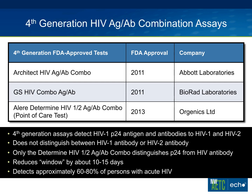What do we know about these fourth-generation tests? They detect both antigen and antibodies to HIV-1 and HIV-2, but they do not distinguish HIV-1 from HIV-2 — that's a really critical concept. They're not going to miss HIV-1 or HIV-2, but they won't tell you which one it is. Only the Determine test actually distinguishes whether it's antigen or antibody tripping the test. From a sensitivity standpoint, these tests reduce the window period by about 10 to 15 days, allowing detection of about 60 to 80 percent of people who are acutely infected with HIV.